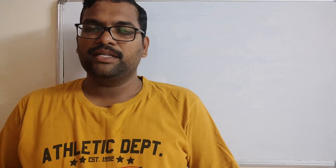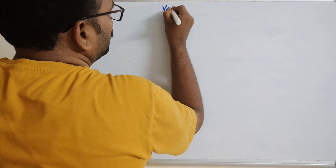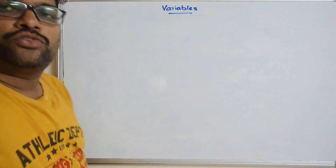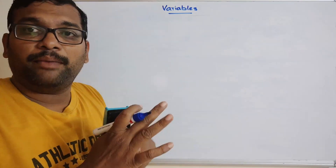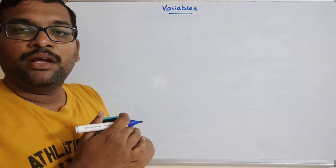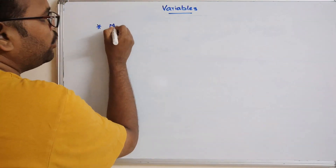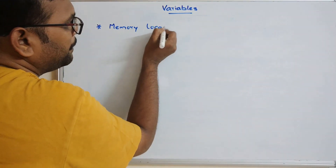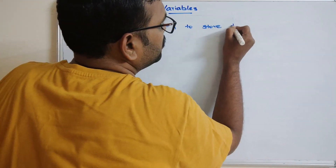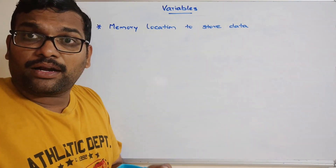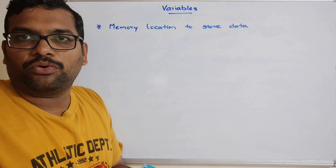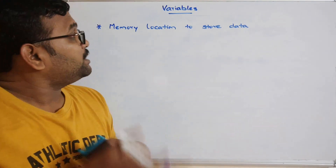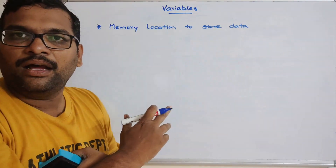Hello friends, welcome back to our channel. Today we will discuss one more concept in R programming, that is variables. So what are variables? In every programming language the basic concept is about variables. A variable is a memory location to store information or data. When we do programs, we give some inputs and it produces some output, and those inputs and outputs need to be stored somewhere — that memory location is what we call a variable.